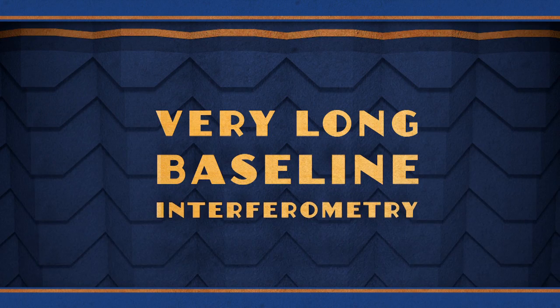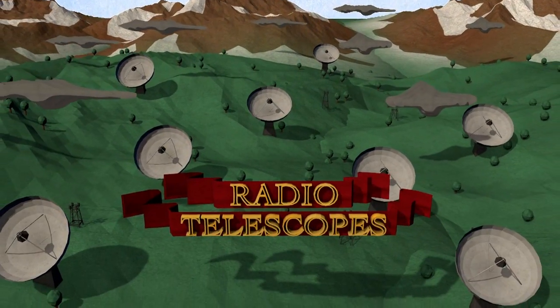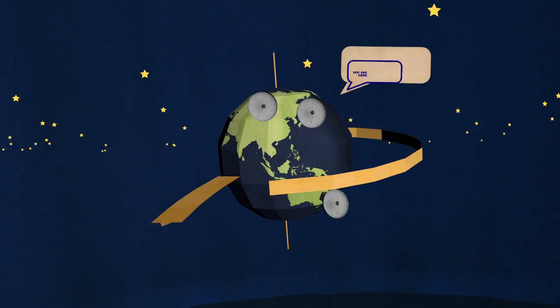Scientists know all this by using a technique called Very Long Baseline Interferometry, which is basically a fancy term for using radio dishes to very precisely measure the Earth's orientation.